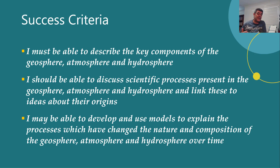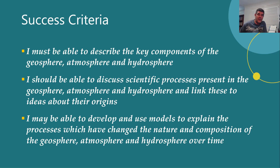When we're looking at the three spheres, being able to describe the key components of each sphere is the basic level. If you don't know what's there, you can't make any comments about how they might have formed. Then we want to be able to discuss some of the scientific processes present in each sphere and link them to ideas about origins. And finally, it's about models — can we develop models that help explain the important processes which have led to the current composition of the geosphere, the atmosphere, and the hydrosphere.